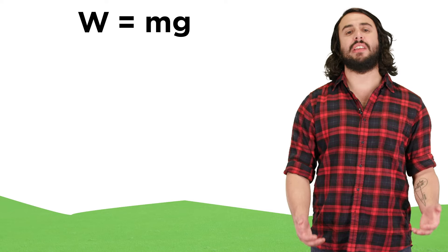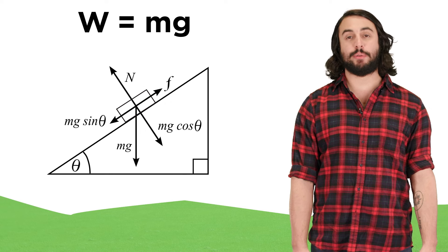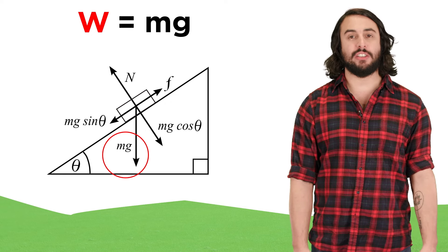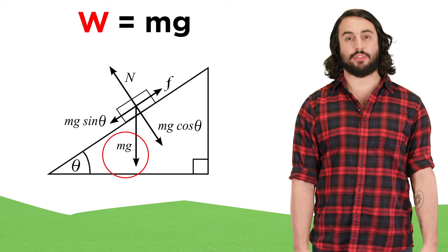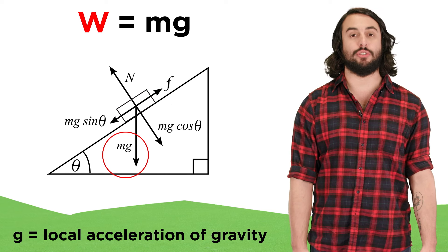Since weight is a force, we will have to include weight in any free body diagram representing objects on Earth. This will be a vector with magnitude equal to m times g, pointing straight down towards the center of the Earth, where g represents the local acceleration due to gravity.